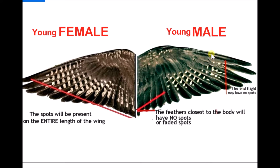The topmost feather part will not have any spots, and the feather which is close to the body will also not have any spots. Only the intermediate section between the top side and the part close to the body will be having the spots.